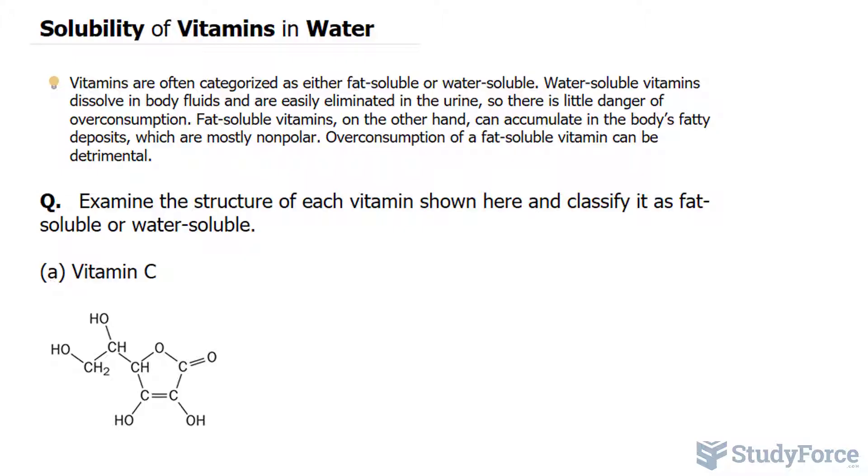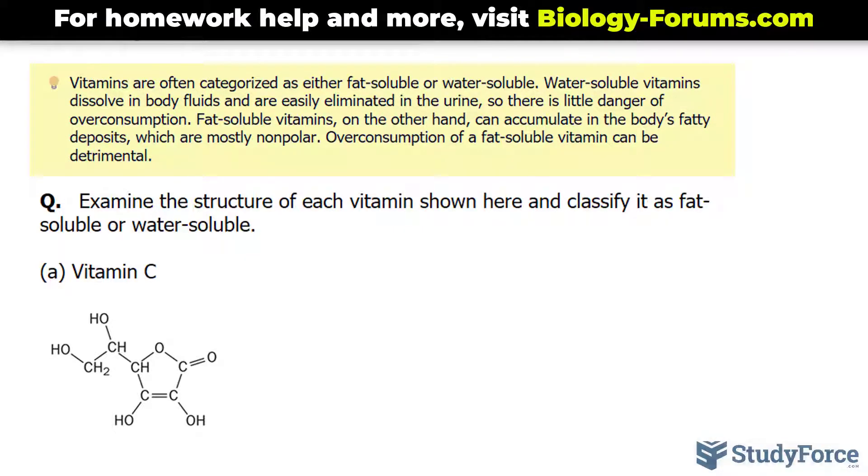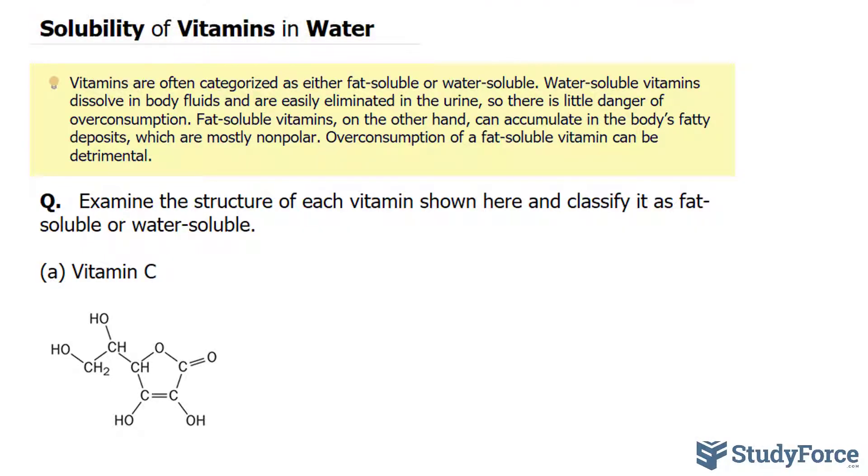So we have four vitamins that we'll be analyzing. As the name implies, water-soluble vitamins dissolve in body fluids and are easily eliminated in the urine, so they're less dangerous if you over-consume them. On the other hand, fat-soluble vitamins can accumulate in the body's fat deposits, which are mostly non-polar. Therefore, the over-consumption of a fat-soluble vitamin can be detrimental.